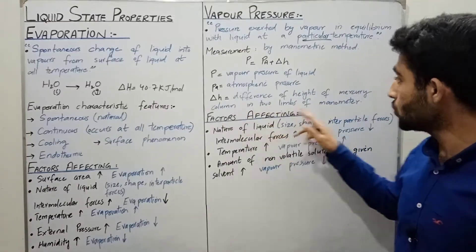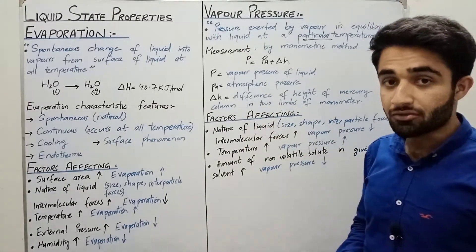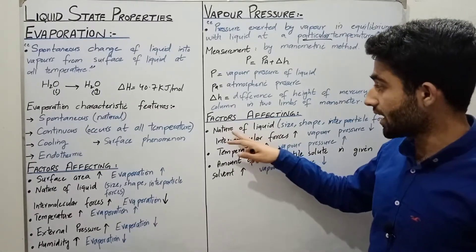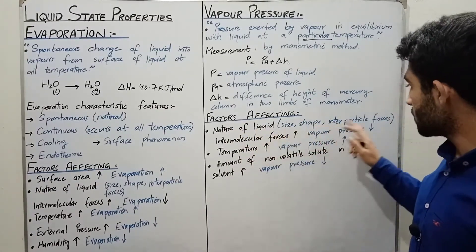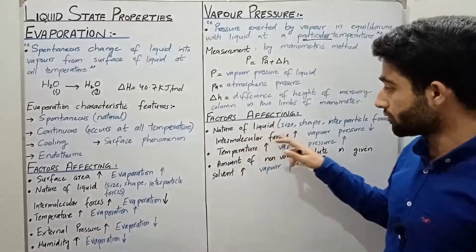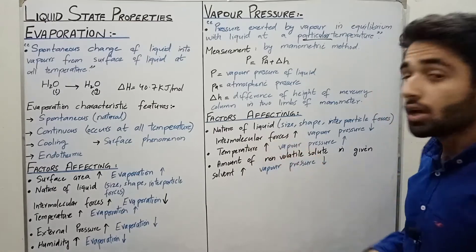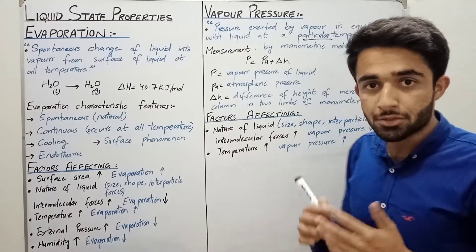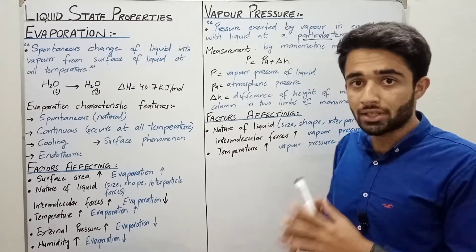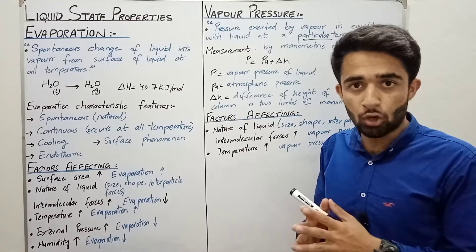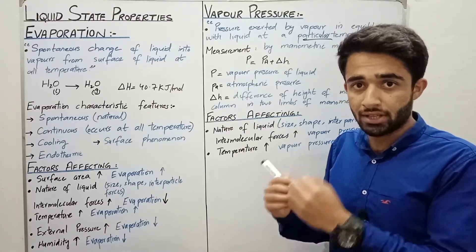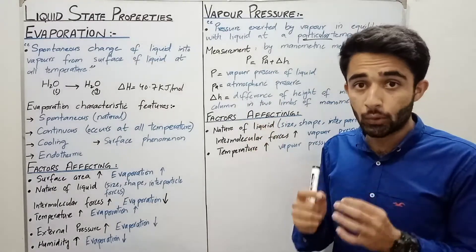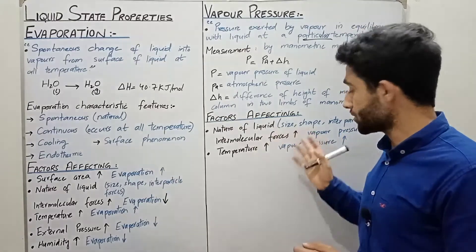The factors affecting vapor pressure: the first factor is the nature of the liquid — size, shape, and intermolecular forces. If we increase the intermolecular forces, vapor pressure decreases, because more forces hold the molecules in the liquid state, so fewer molecules are present in the vapor state and less pressure is exerted by the vapor in equilibrium with the liquid.